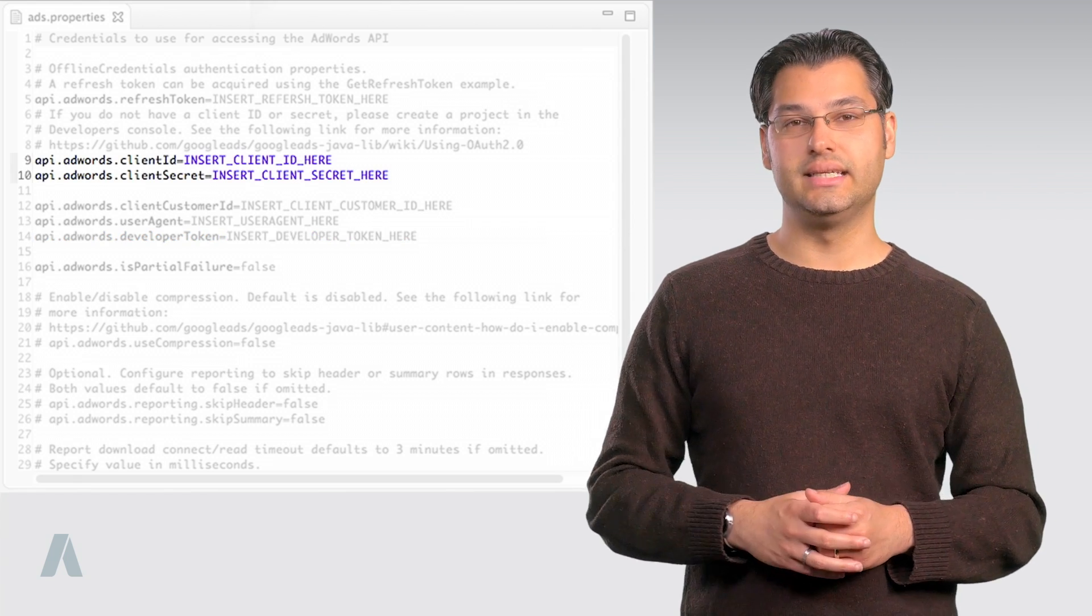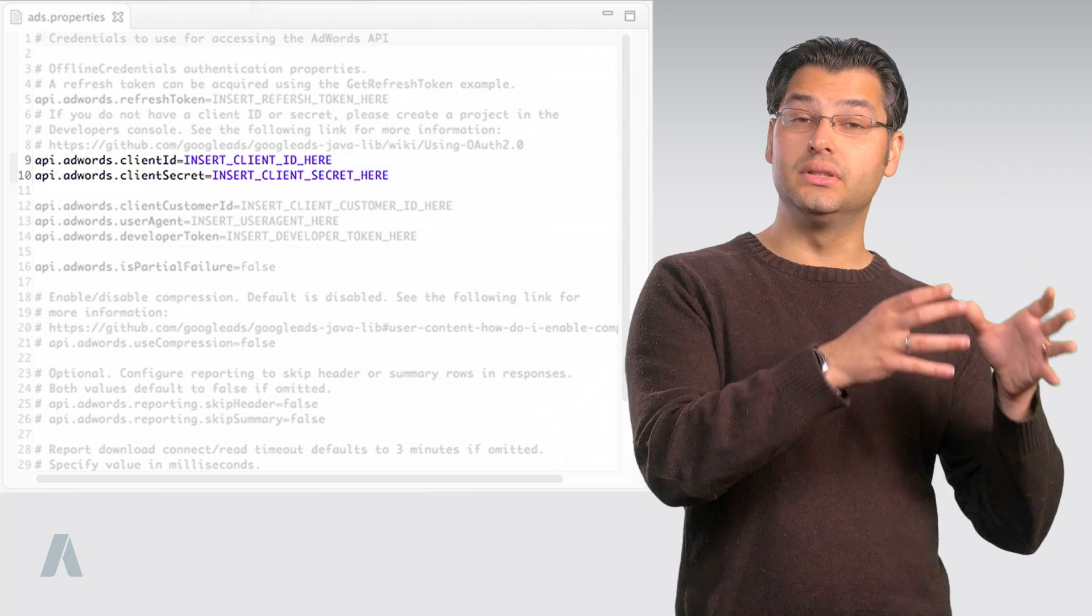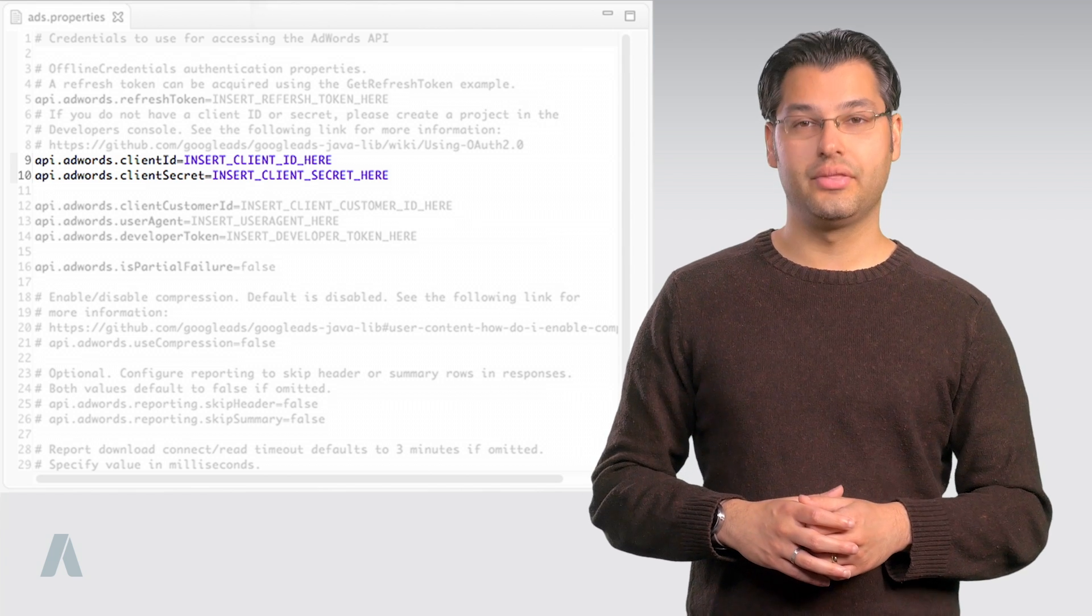Client ID and Client Secret. These map your application to a project in the Google Developer Console and are used for OAuth 2.